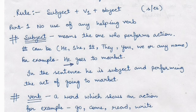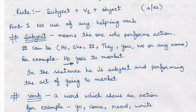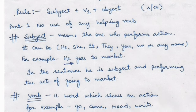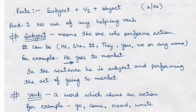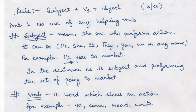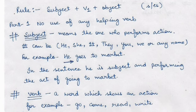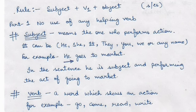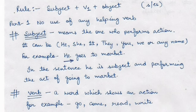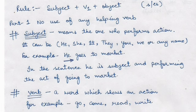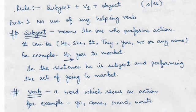A subject is the one who performs the action in the sentence. It can be he, she, it, they, you, we, or any name or thing. For example, 'he goes to market' — in this sentence, 'he' is the subject and he is performing the act of going to the market. So the subject is the one who performs the action in the sentence.